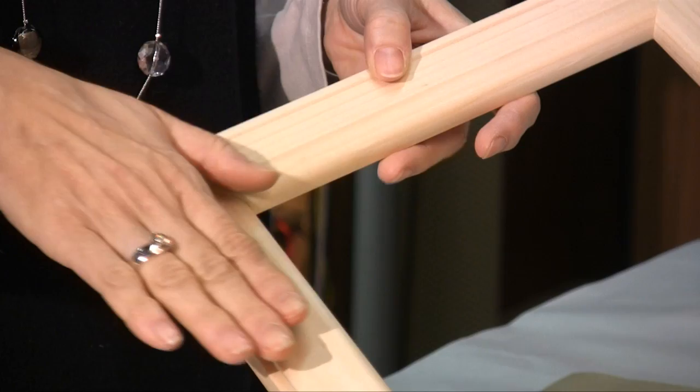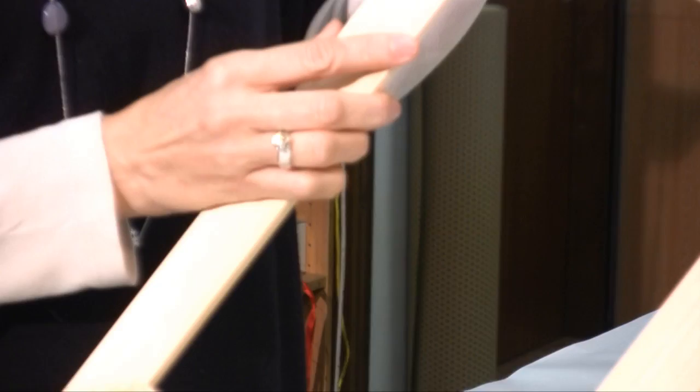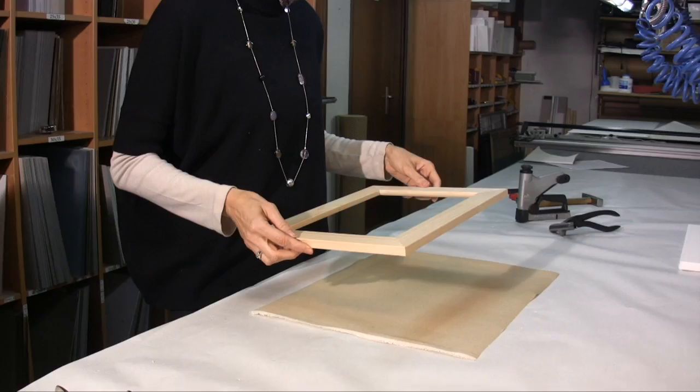Now instead I apply canvas to a frame created with a cut and assembled moulding, as though it were a normal frame. On this type of frame obviously it's not possible to apply the wedges in the corners.